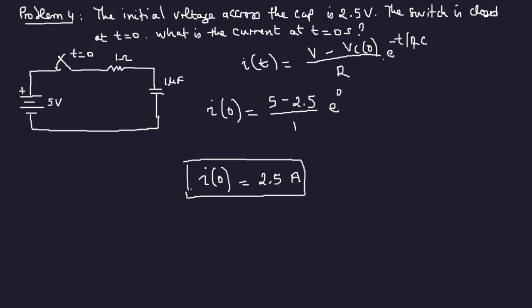RC and RL transient problems are pretty straightforward. You just have to recognize what the initial voltage is and plug it into the equations to find whatever is being asked. I haven't come across any particularly challenging RC and RL problems. If you have any questions, drop them in the comments or send me an email. Thanks and see you later.